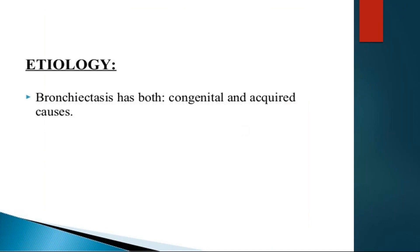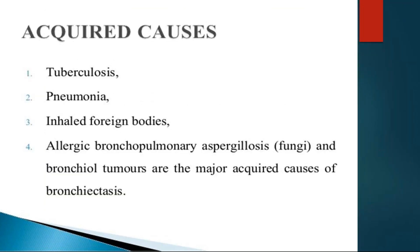Etiology: it can be congenital or acquired. Coming to the acquired causes, the most common cause of bronchiectasis is tuberculosis. The next common causes are pneumonia, inhaled foreign bodies, allergic bronchopulmonary aspergillosis, and bronchial tumours. These are the most common acquired causes of bronchiectasis.